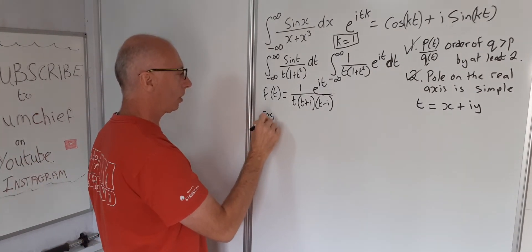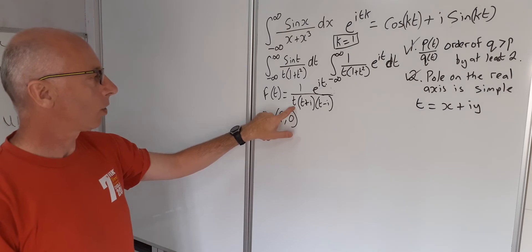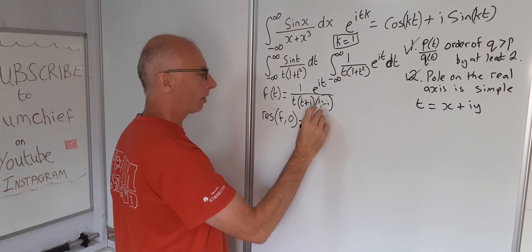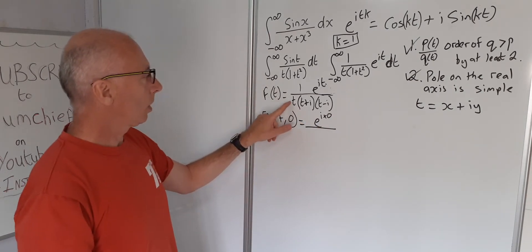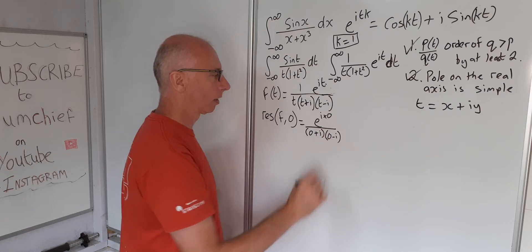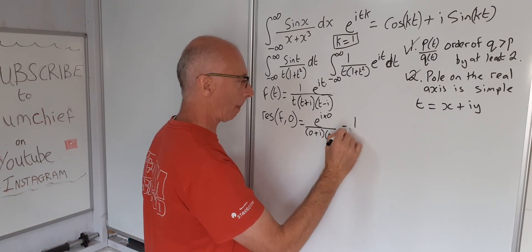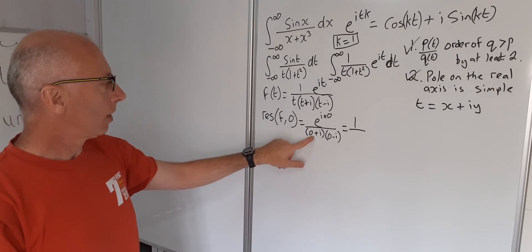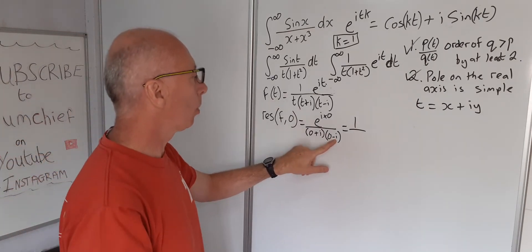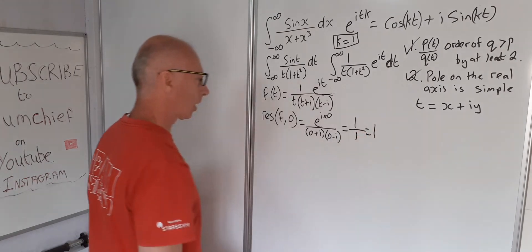The residue of f at t equals zero: using the cover-up method we remove the t factor and plug in zero. We get e^(i·0) over (0+i)(0-i), which is 1 over i·(-i) = 1 over 1 equals one. So the residue of f at zero equals one.